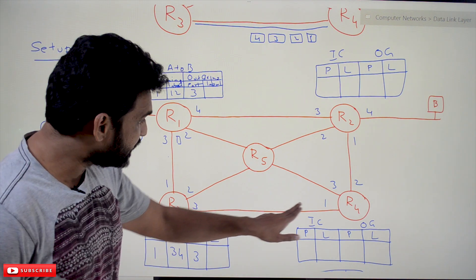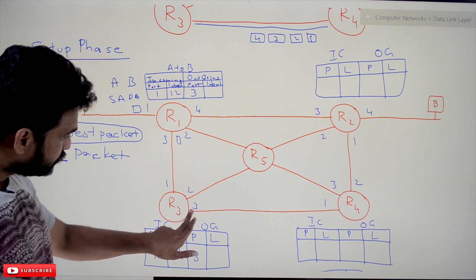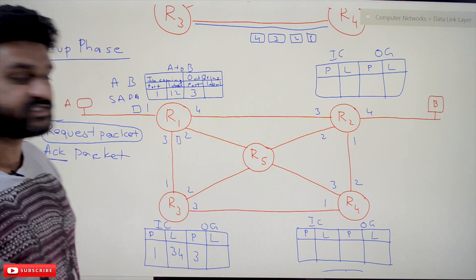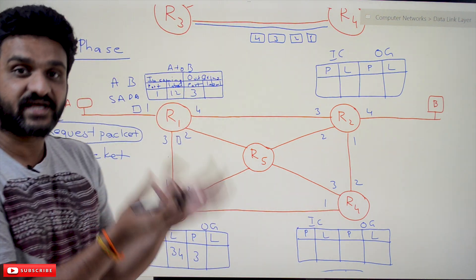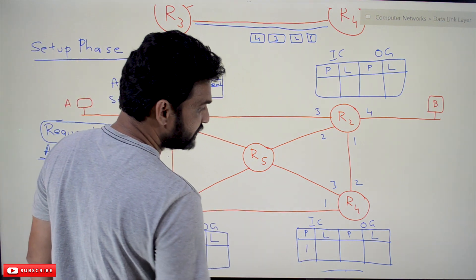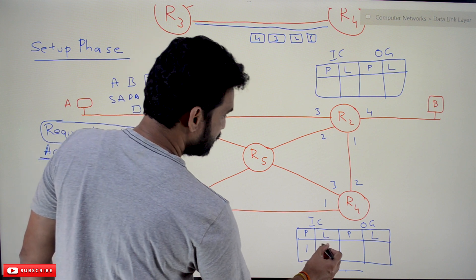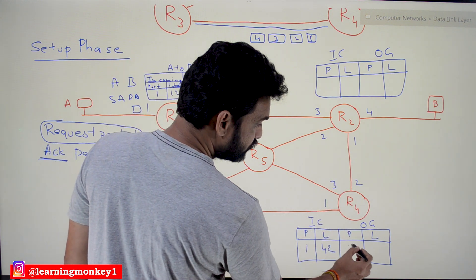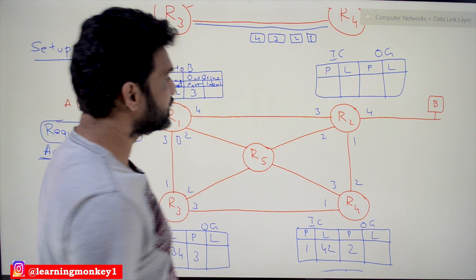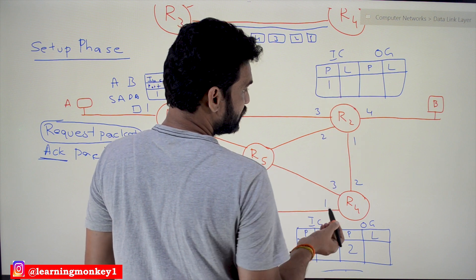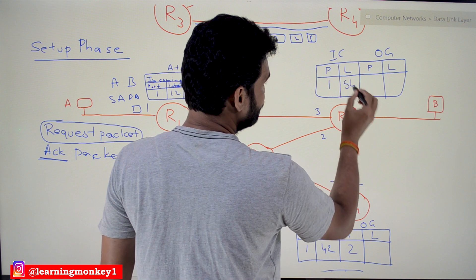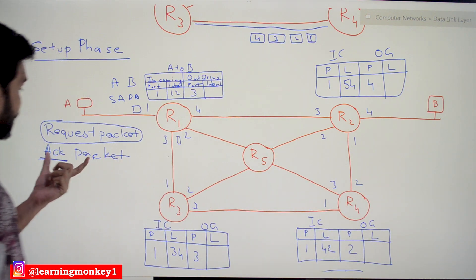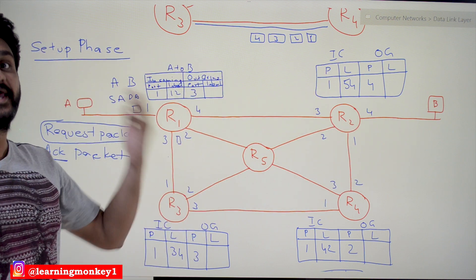The packet is transmitted through this port to R4. At R4, it decides this is a request packet, fills: incoming port 1, label assumed 42, outgoing port 3, and the outgoing label is not yet assigned. Similarly, it gets received at R2: incoming port 1, label assumed 54, outgoing port 4, and the outgoing label is not yet assigned. Now the acknowledgement packet will be transmitted from B back to A.